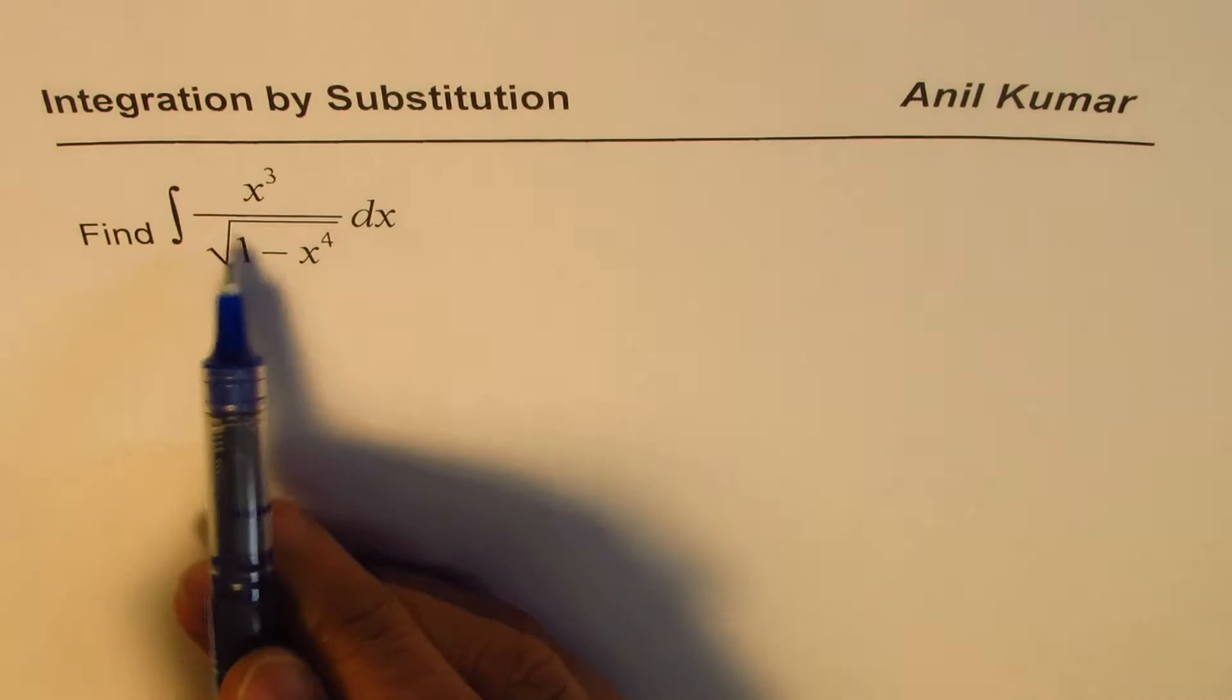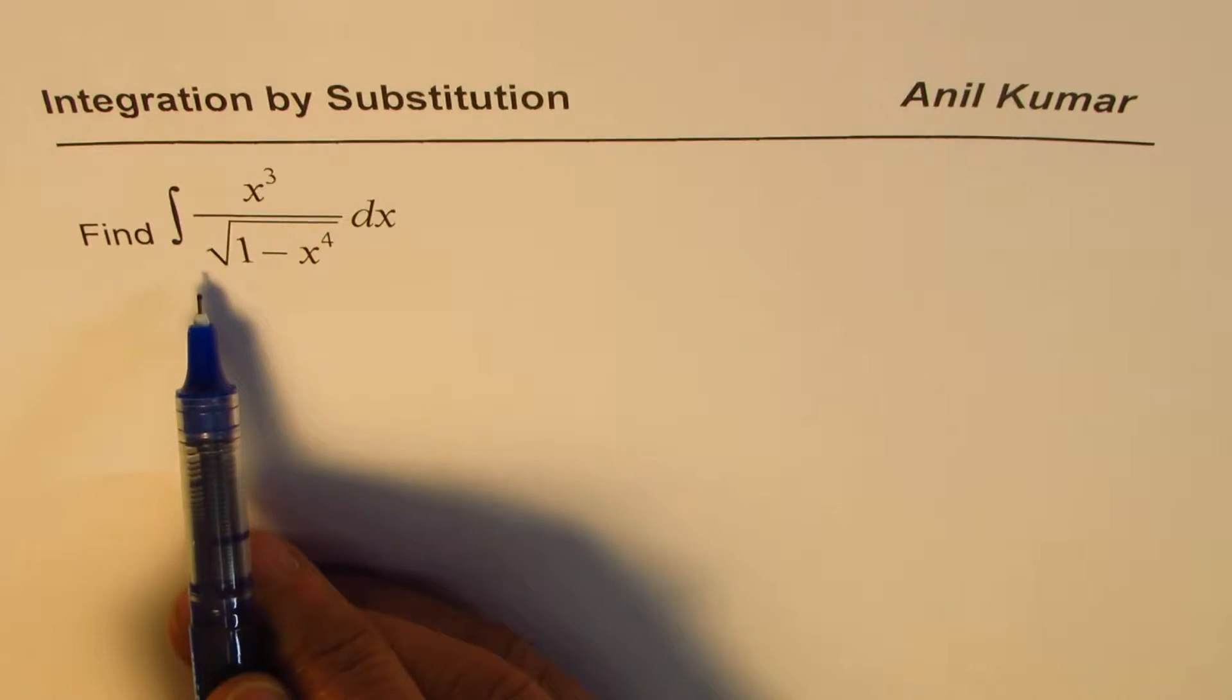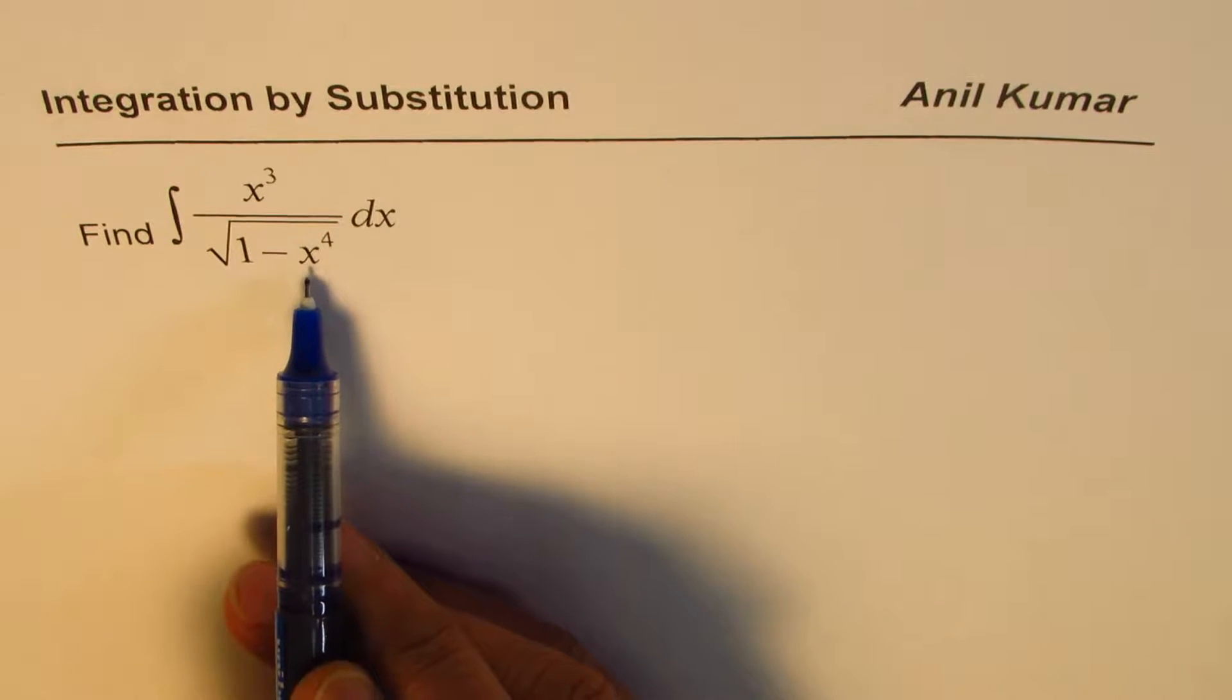find integral of x cube divided by square root of 1 minus x to the power of 4.